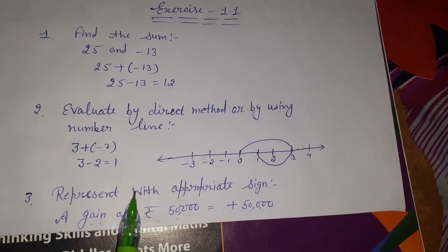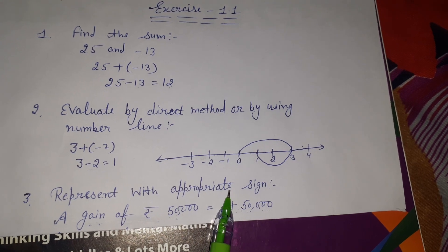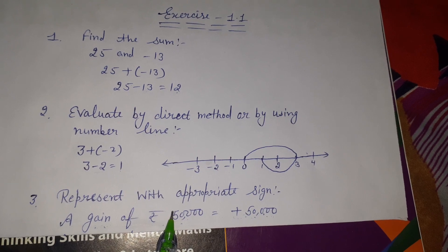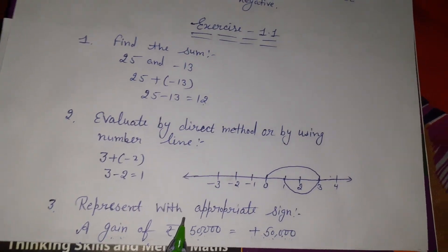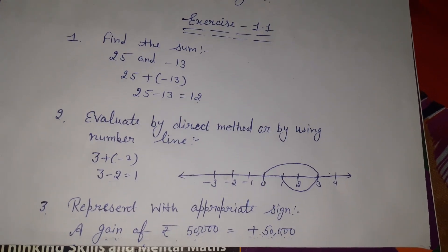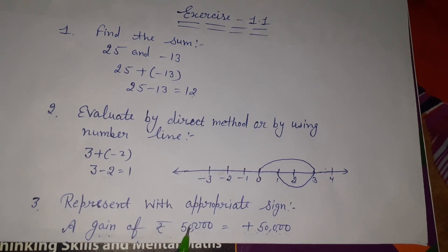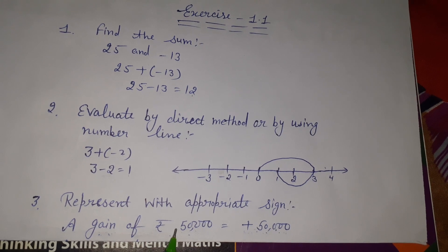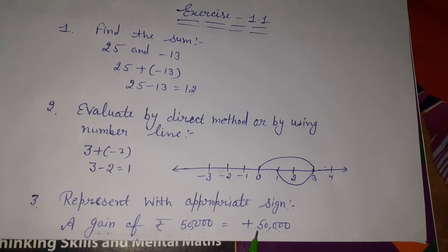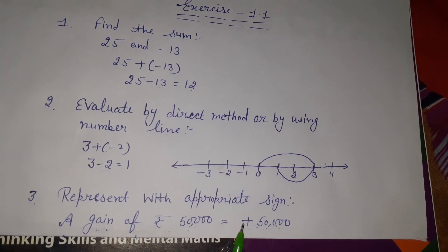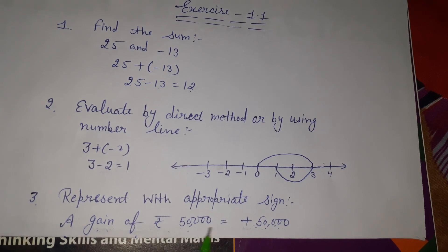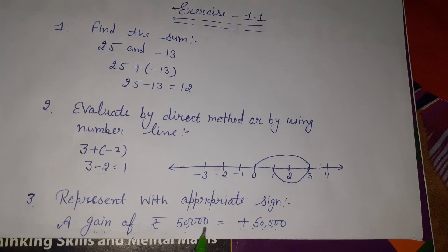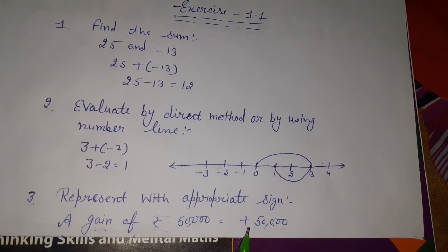Third sum: we need to show this with a sign. In this problem, for the given statement, we need to show with plus or minus sign. A gain of rupees 50,000 - this is profit. Profit is shown with plus sign. If it was loss of rupees 50,000, we would show it with minus sign: -50,000.